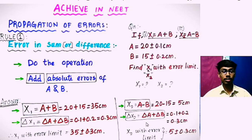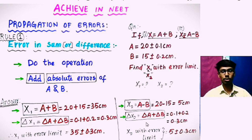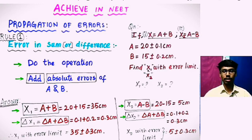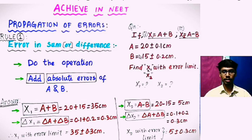In this video, we will discuss the 3 important rules to solve an error problem. First question: if x1 equals a plus b and x2 equals a minus b, where a equals 20 plus or minus 0.1 cm and b equals 15 plus or minus 0.2 cm, find x1 and x2 with error limit.